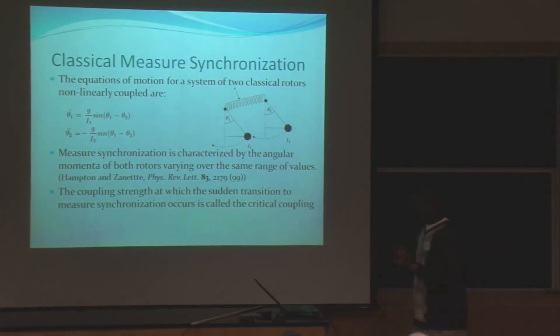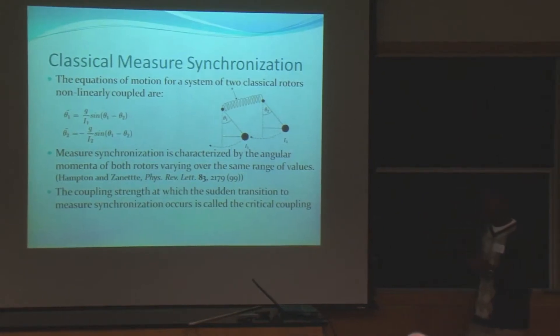The equations for two nonlinearly coupled oscillators are given here. G is the coupling strength, which means basically, think of this as the stiffness of the spring. If the spring is stiffer, then the movement of one pendulum affects the second pendulum more strongly. So higher G just means they affect each other more strongly, lower means less strongly. I is the moment of inertia of the pendulum, its resistance to motion. Measure synchronization is characterized by the angular momentum of each oscillator varying over the same range of values. I'll explain that in more detail in the next slide. The coupling strength at which the sudden transition to measure synchronization occurs is called the critical coupling.